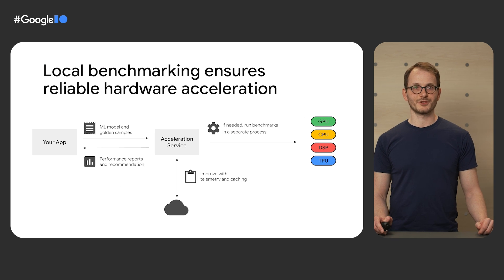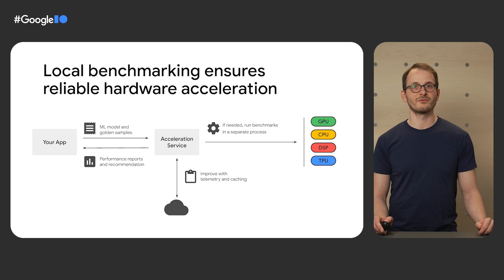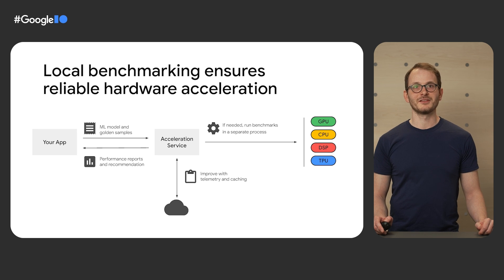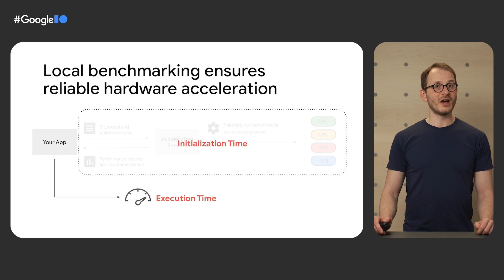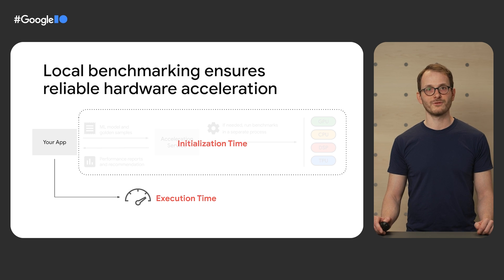Here's how Local Benchmarking works. At runtime, you call into Acceleration Service with your ML model and a few golden samples. The service then spins up new processes for testing each different hardware available. Running them in separate processes ensures your app doesn't suffer from driver stability issues, such as crashes or hangs. After benchmarking is completed, you get a report on latency, stability, and accuracy of different accelerators, and you can then choose the accelerator you want based on your business needs. The more devices you use this technology on, the better it gets, as it collects telemetry and automates some of this decision-making on the cloud. You also have control over when to run these local benchmarks — for example, you can choose to complete all of it at app initialization time and get it cached, so your app will be ready to benefit from performance at future execution time.